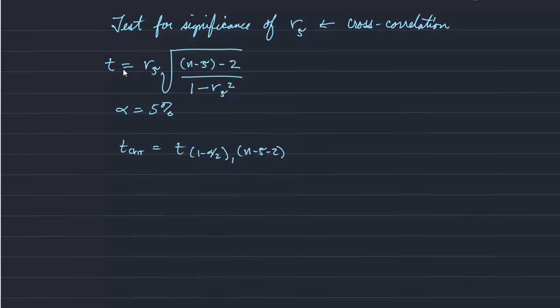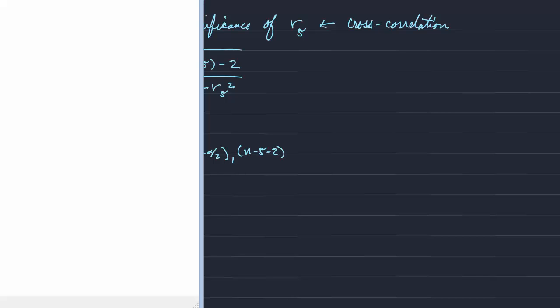So we convert our cross correlation record, r sub tau to t value as a function of lag. And then compare that to the critical t value.